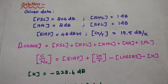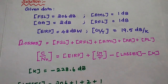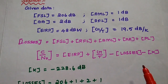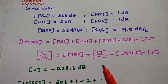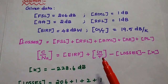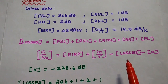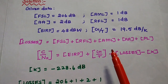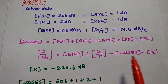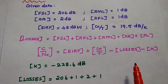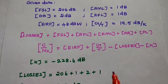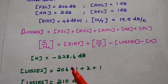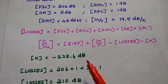The C/N formula is: C/N = EIRP + G/T − Losses − K. Here EIRP value is given and G/T value is given. The overall losses can be obtained by adding all the given losses together. The K value is the Boltzmann constant, which in decibels is −228.6 dB.